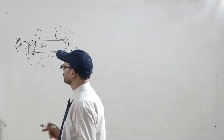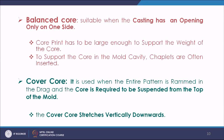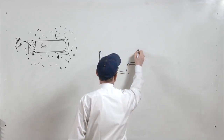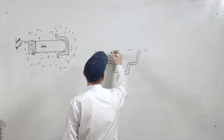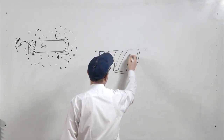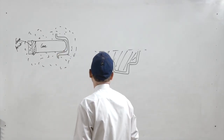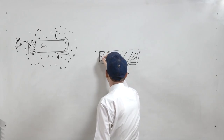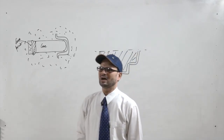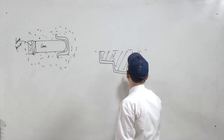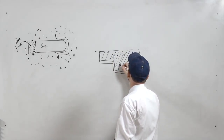A cover core is one where the entire pattern is rammed in the drag and the core is suspended from the top of the mold. In that case, if you have such a cavity, it is done completely in the drag portion, and because of this core you will get the desired cavity generated. Such cores are known as cover cores — they stretch vertically downwards.